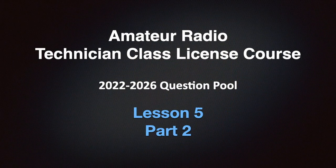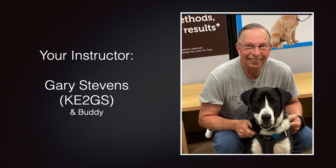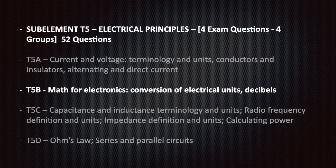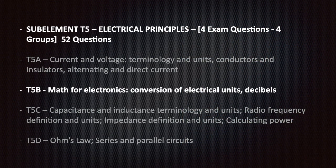Are you ready to learn? Well, let's get started. This video is Lesson 5, Part 2 of my Amateur Radio Technician Class license course, covering the 2022 to 2026 question pool. I'm Gary Stevens, your instructor. I've been an amateur radio operator since 2001. In 2014 I earned my Amateur Extra license, and I've been teaching amateur radio for over 15 years. My call sign is Kilo Echo 2 Golf Sierra.